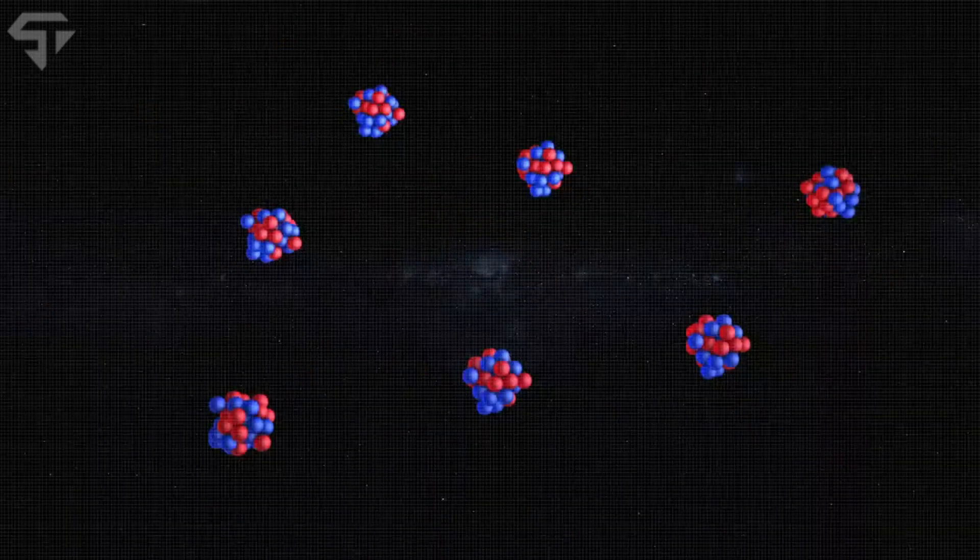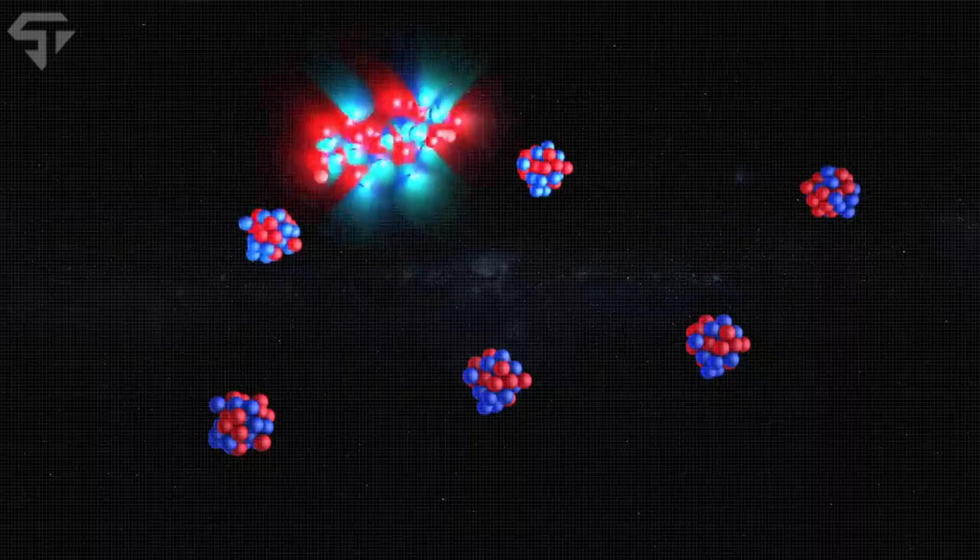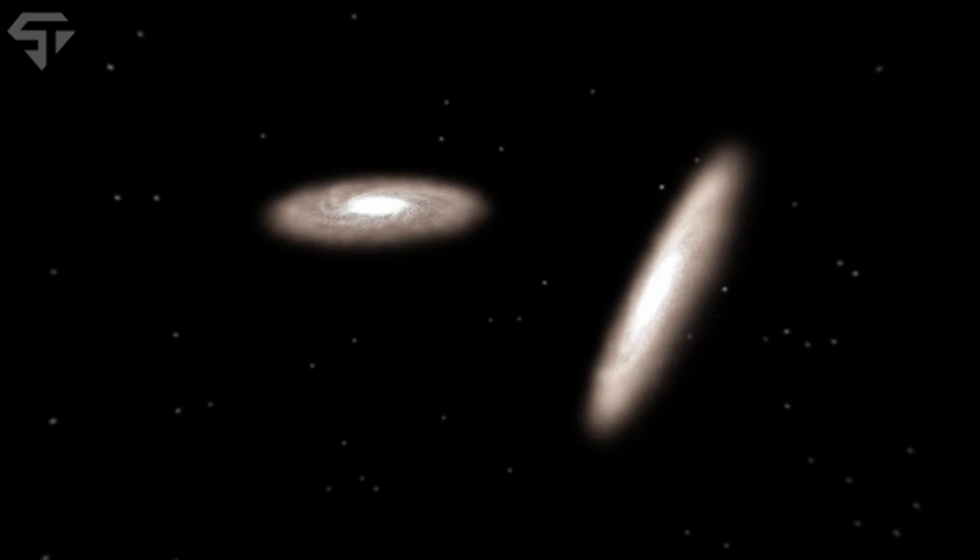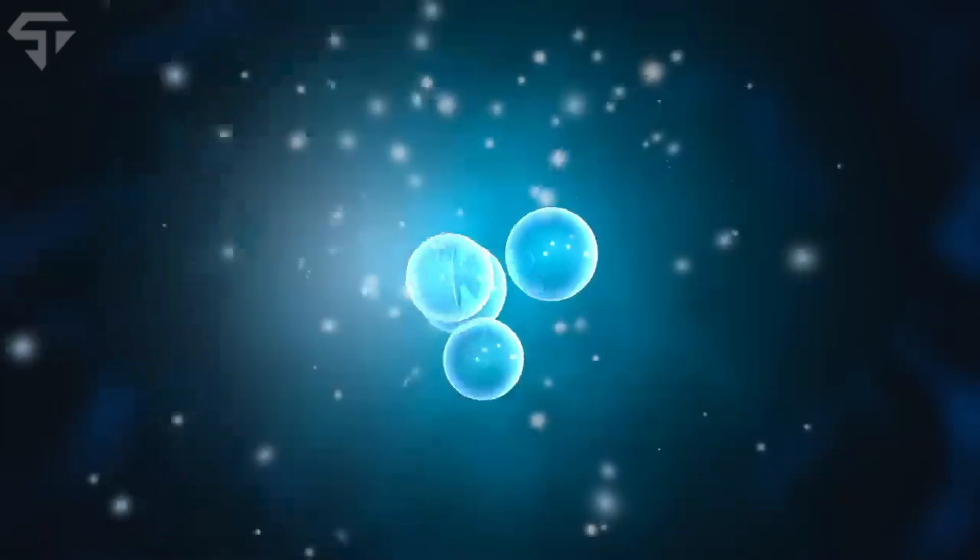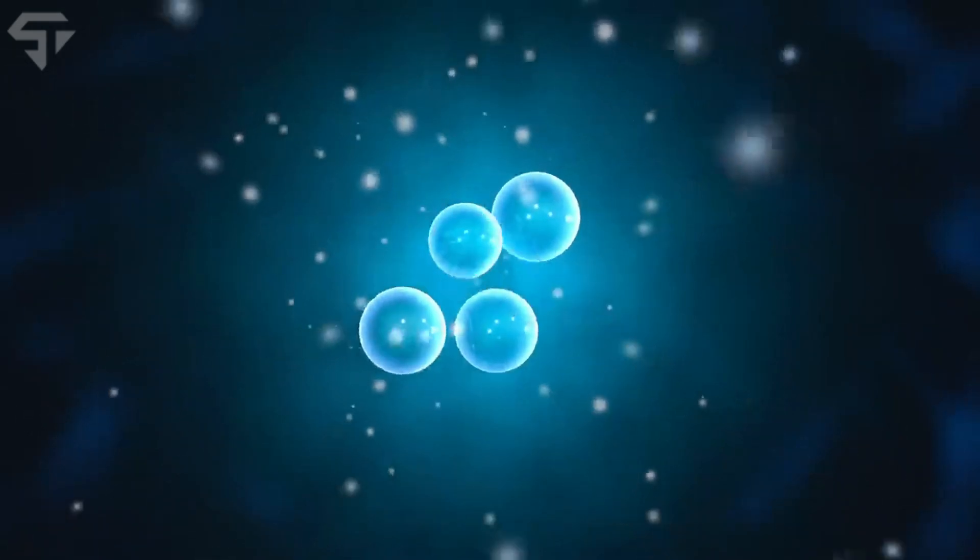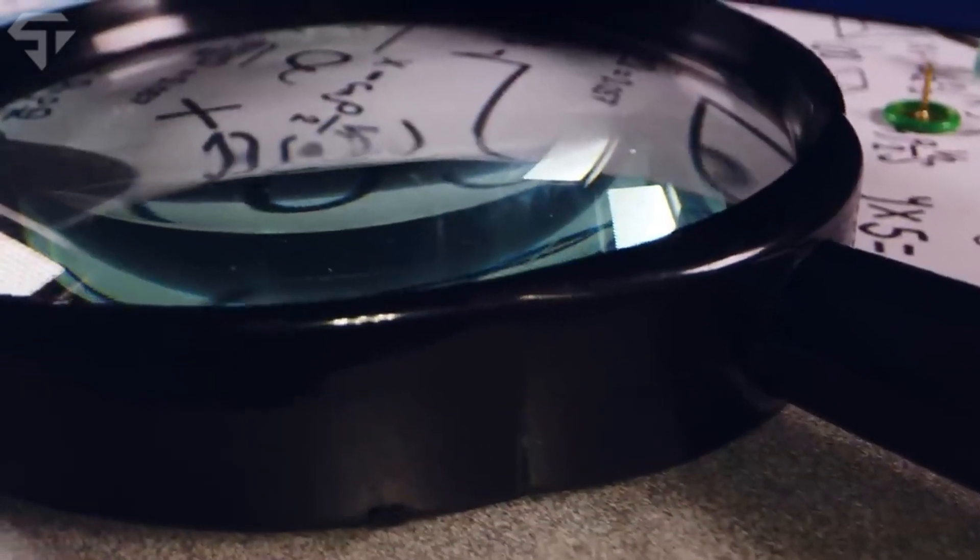As stars grouped together, galaxies were born, creating the vast structures that dominate the universe. Early galaxies were much smaller than the ones we observe today, but they were the seeds from which all large-scale cosmic structures would eventually grow. Over time, galaxies merged and formed clusters, creating superclusters, the largest structures in the universe.